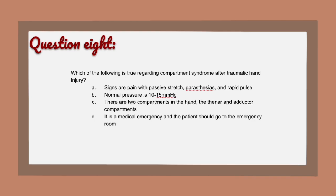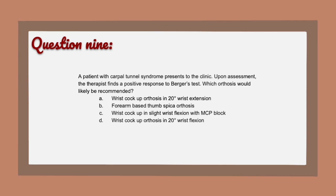Question 8: The correct answer is D — it is a medical emergency. The signs and symptoms are the four P's: pain with passive stretch, paresthesias, pallor or loss of color, and pulselessness. Normal pressure registers 8 to 10 millimeters of mercury; in compartment syndrome it's typically around 30. In the hand there are four compartments: interosseous, thenar, hypothenar, and adductor.